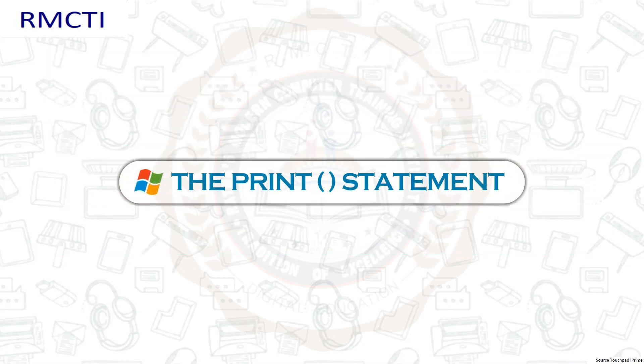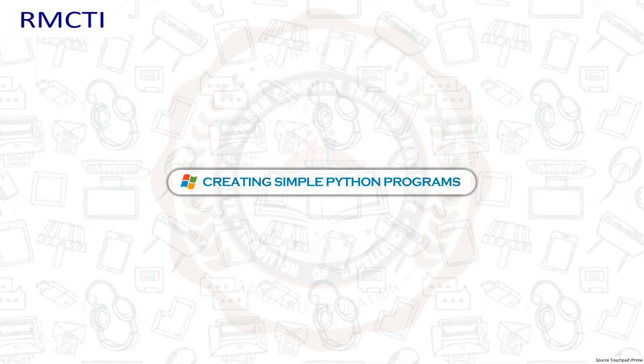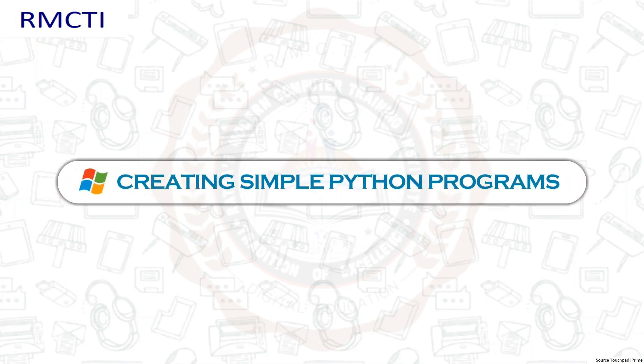The print statement is used to print the output of a program on the screen. The general syntax is: print(message, variable_name). For example, print('area of the square is', area).